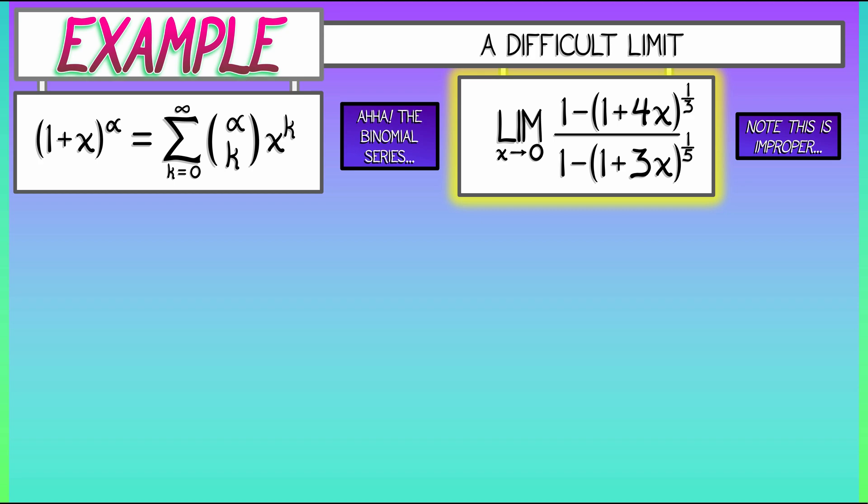So, if we take this limit, we note that in the numerator, we have an example where alpha is one-third, and in the denominator, we have an example where alpha is one-fifth.